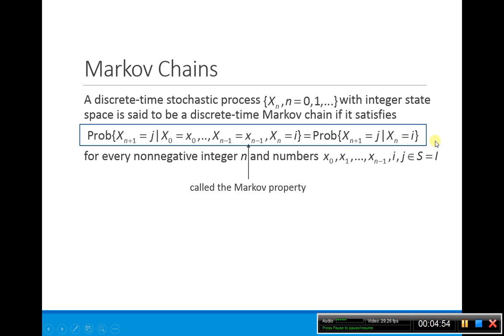This is what's called the Markov property. Basically, what this says is that your random variable X at the next time step equals J, the probability that that happens given all of these previous time steps, is the same as the probability of just the present time.